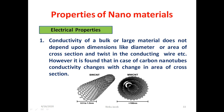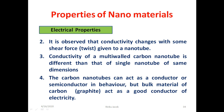Regarding electrical properties, the electrical conductivity of bulk material does not depend on dimensions like diameter or area of cross section. However, in carbon nanotubes, conductivity changes with change in area of cross section and also with shear force — i.e., twist applied to the nanotube. Conductivity of a multi-wall carbon nanotube differs from that of a single-wall carbon nanotube of same dimensions. Carbon nanotubes can act as a conductor or semiconductor, whereas bulk carbon, such as graphite, acts as a good conductor.